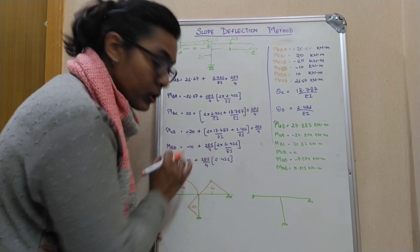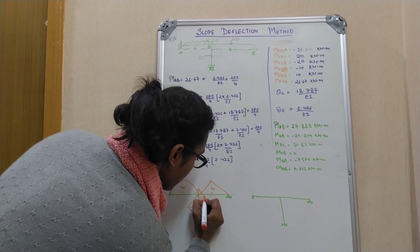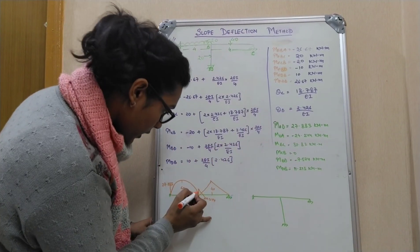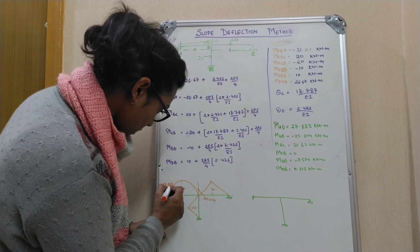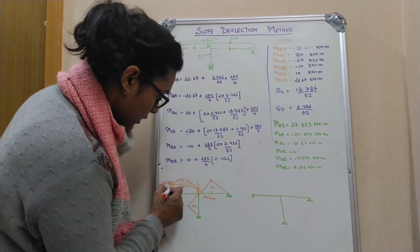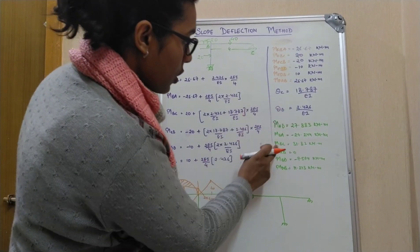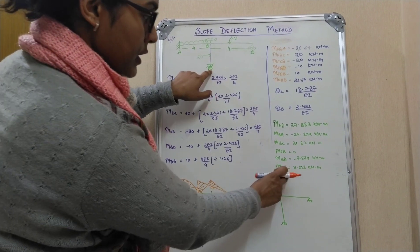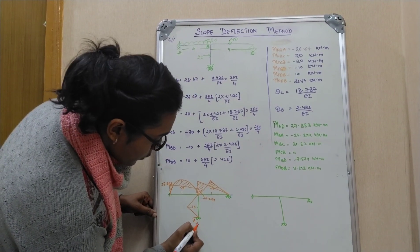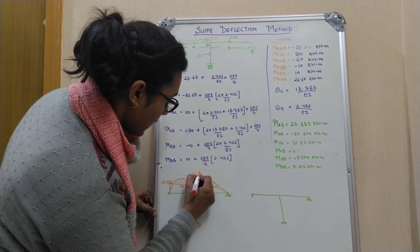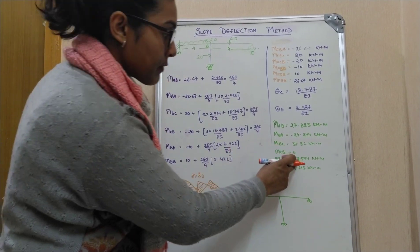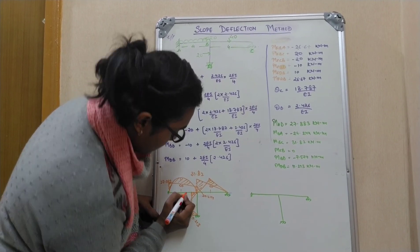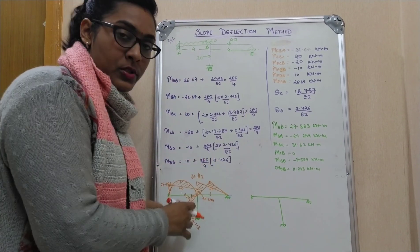Many students do not put the values and their answers do not come out correct, so they don't get full marks. The values are: MBA is 27.244, MBC is 31 (approximately), MCB is zero, MDB is 11.213, and MBD is 31.82, and MBT is 7.574.